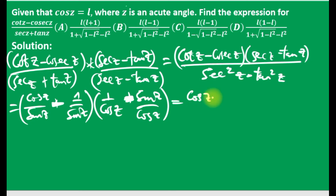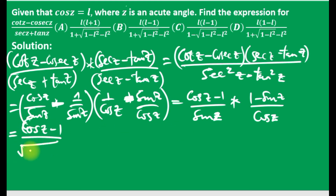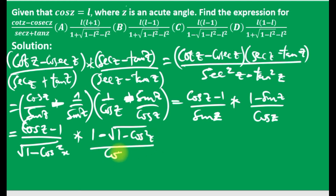Combining over a common denominator, this becomes cos z minus one over sin z, times one minus sin z over cos z. From our Pythagorean identity, since we are given in terms of cos z, we replace sin z with square root of one minus cos squared z. The second factor becomes square root of one minus cos squared z over cos z.